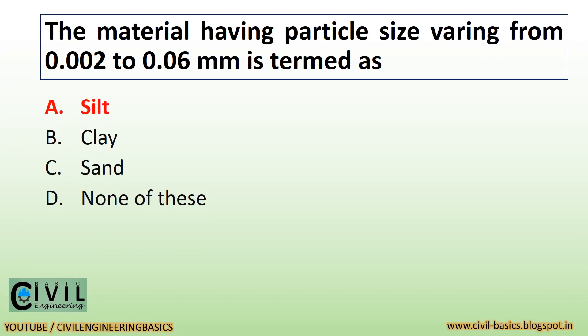The material having particle size varying from 0.002 to 0.06 millimeters is termed as silt. Visit civilbasics.blogspot.in for more details.